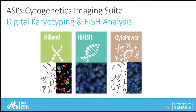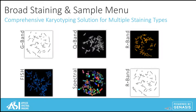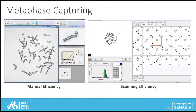ASI's cytogenetic solution for digital karyotyping and analysis is HighBand. HighFISH is for FISH image and analysis. CytoPower bundles these technologies together. Our comprehensive karyotyping solution enables multiple stain types including G-band, Q-band, R-band, FISH metaphases, and spectral imaging. For metaphase capturing, labs can choose between manual or scanning. Using our manual acquisition model, users can capture a high-resolution image of the metaphase and then have the ability to digitally add in a floating chromosome and enhance the image before analysis.